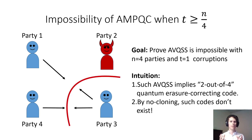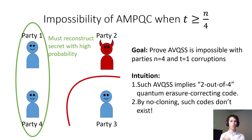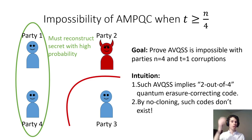Let's imagine a scenario where the dealer is corrupted and does not send any share to party 3. During this, party 2 will also behave honestly — note that party 2 here is corrupted. If party 3 is sufficiently delayed, then party 1 and party 4 will assume that party 3 is not sending messages and won't detect that party 3 never received a share in the first place. Then during reconstruction, the corrupt party 2 can just withhold their share and stay silent. At this point, party 3 doesn't have a share to contribute, so parties 1 and 4 must be able to reconstruct the secret. However, this would correct exactly two out of four shares, which would violate the impossibility for quantum erasure correcting codes.